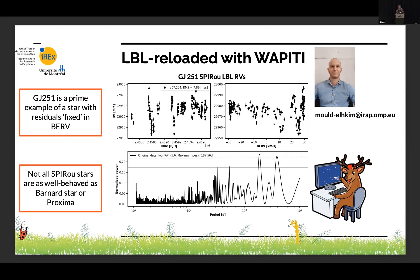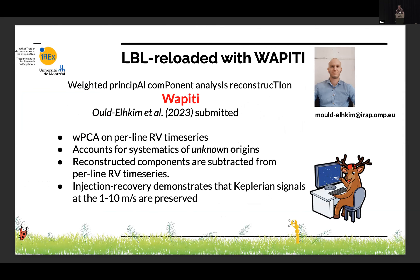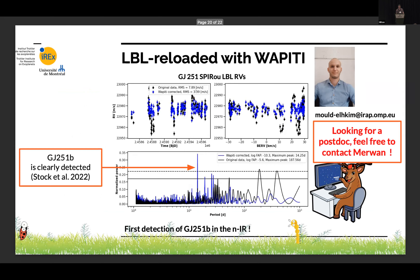GJ 251 is a case of a not-well-behaved star. He has a paper submitted. With the SPIRou data, it's basically a reconstruction of principal components that correlate in the data. Injection-recovery tests show it preserves RV signals at the one-to-ten meters-per-second level. Here's an example of GJ 251 before and after the decorrelation — a really nice peak shows up. I should mention he is looking for a postdoc, and he does wonderful work in PRV. You can send him an email if you want someone to work on LBL with you.